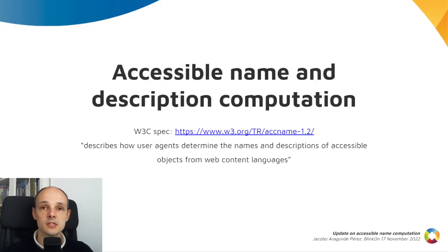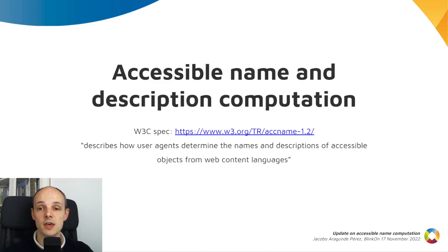Names are an important part of web accessibility. Interactive elements must have a name that can be spoken or printed in Braille by assistive technologies, so users of those technologies can figure out their purpose.